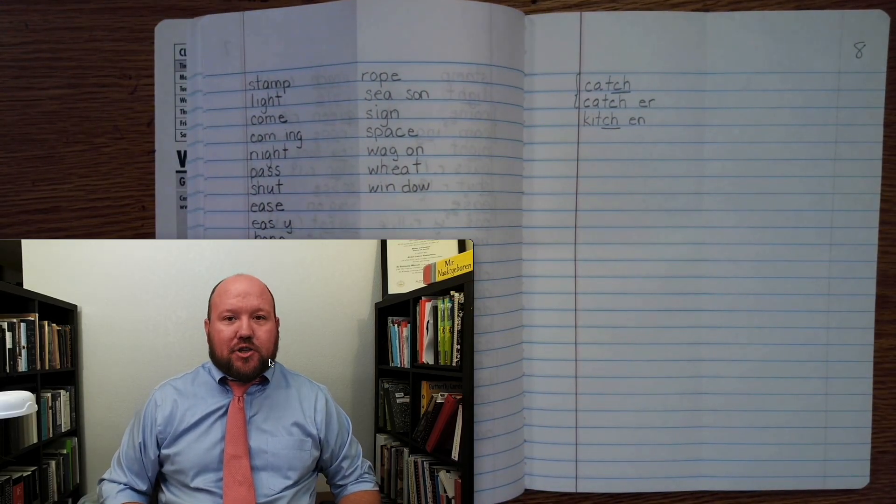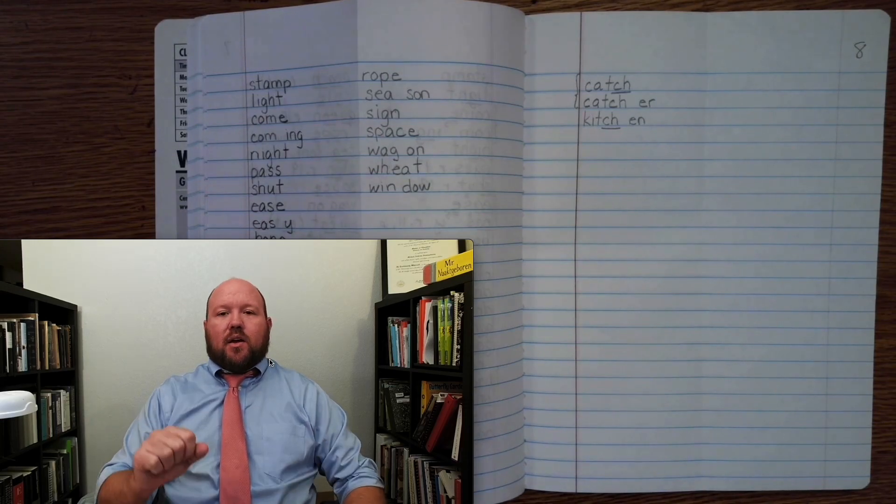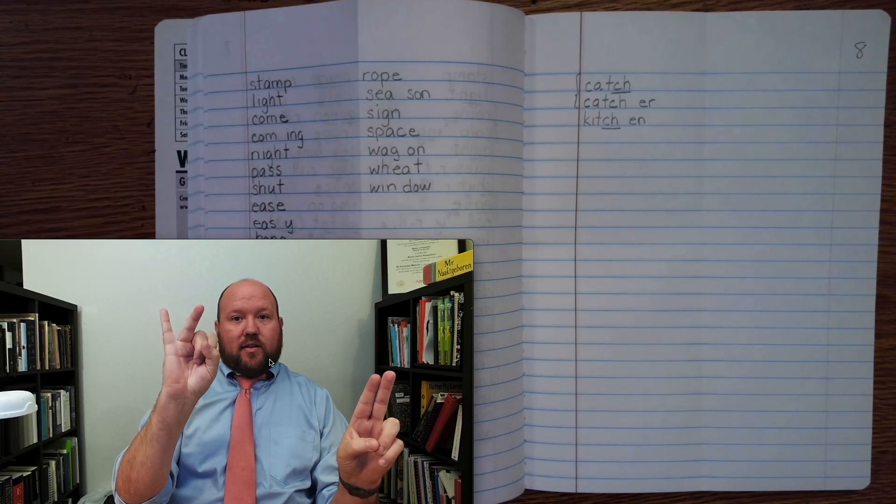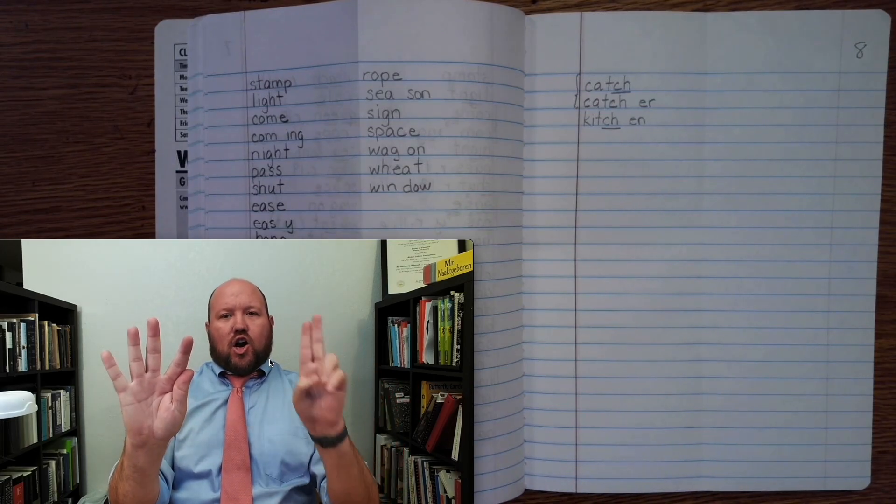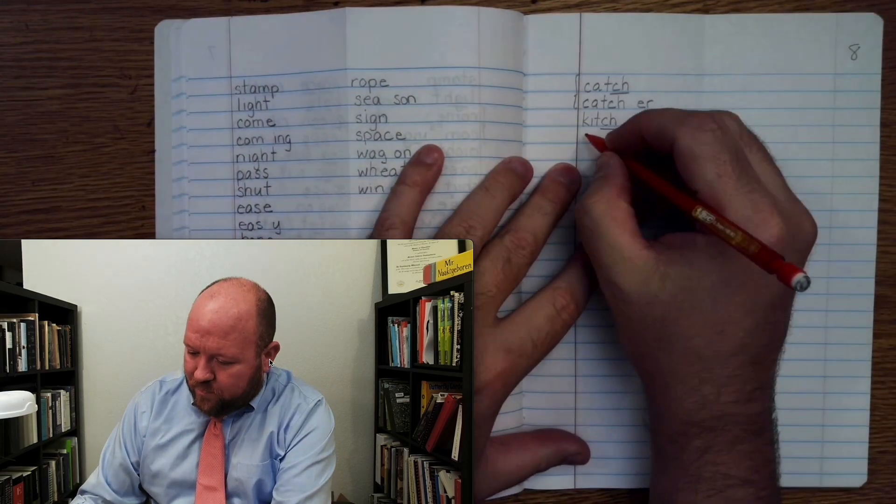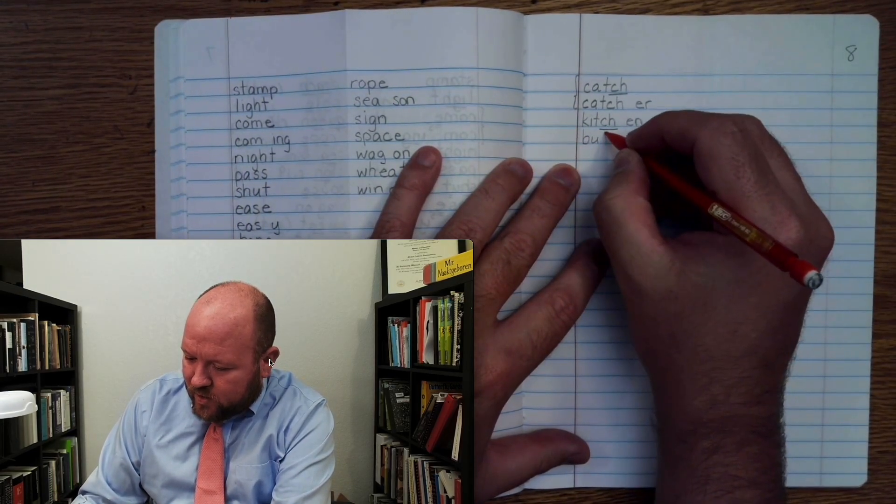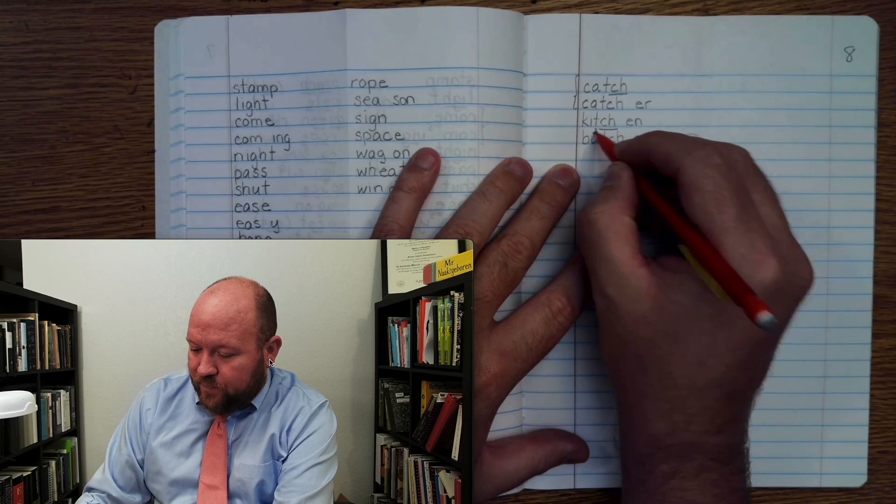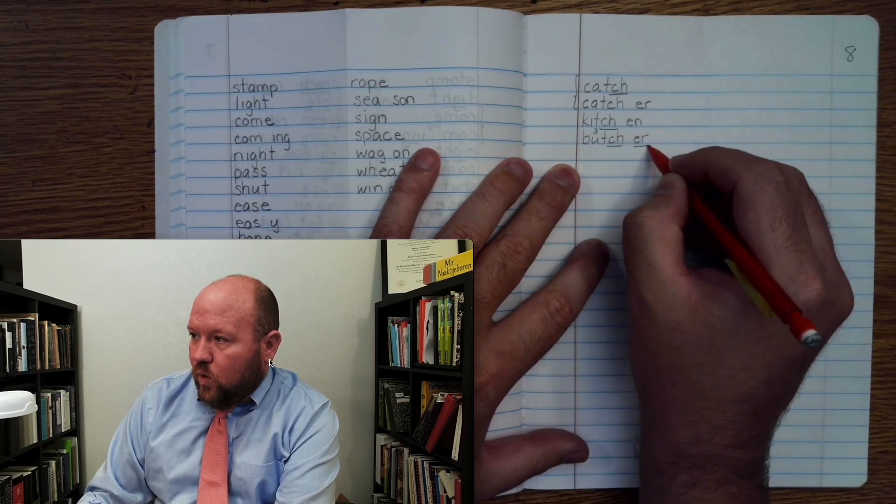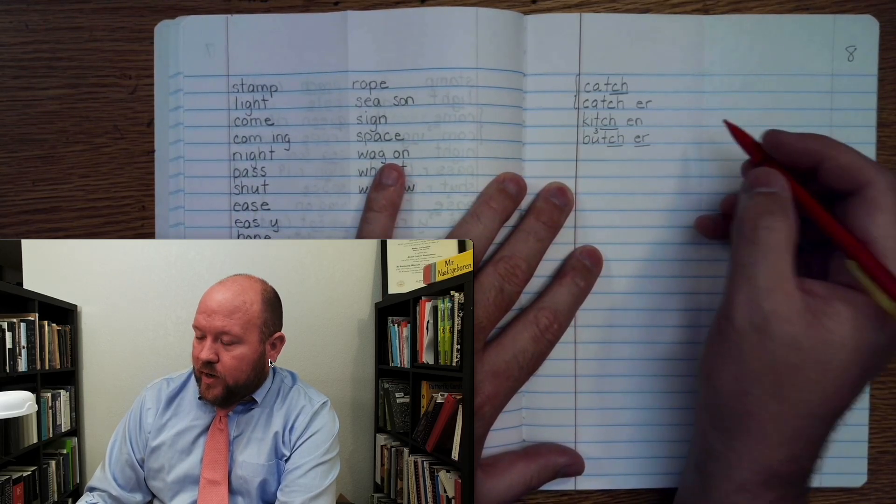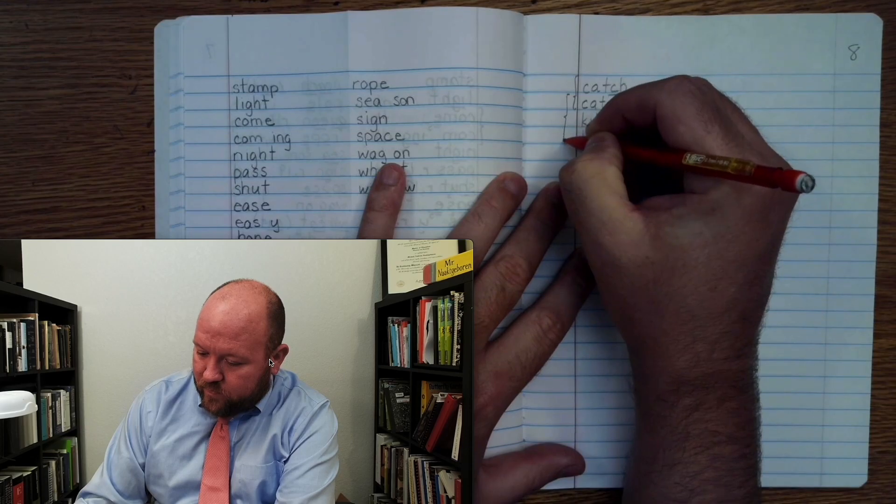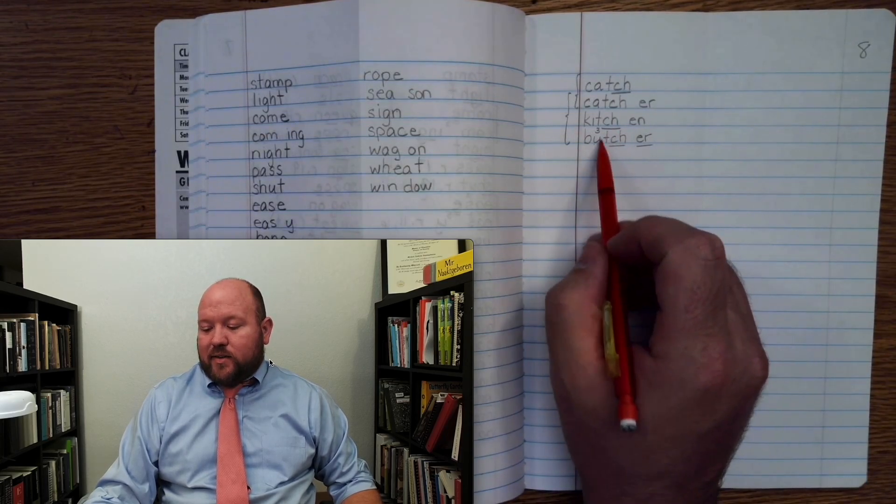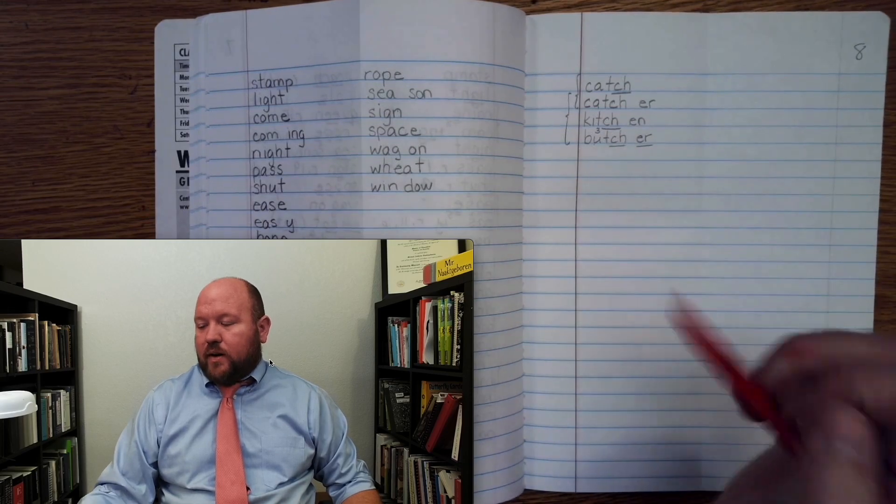And then the last one is butcher. So butcher is like someone who cuts meat, to extra, butcher. We hear a ch coming next, so T-ch. Right? And then we'll brace these three here together. So just remember, when you hear that a single vowel followed by a ch, oftentimes you're going to have a T in the middle. Not always, but oftentimes.